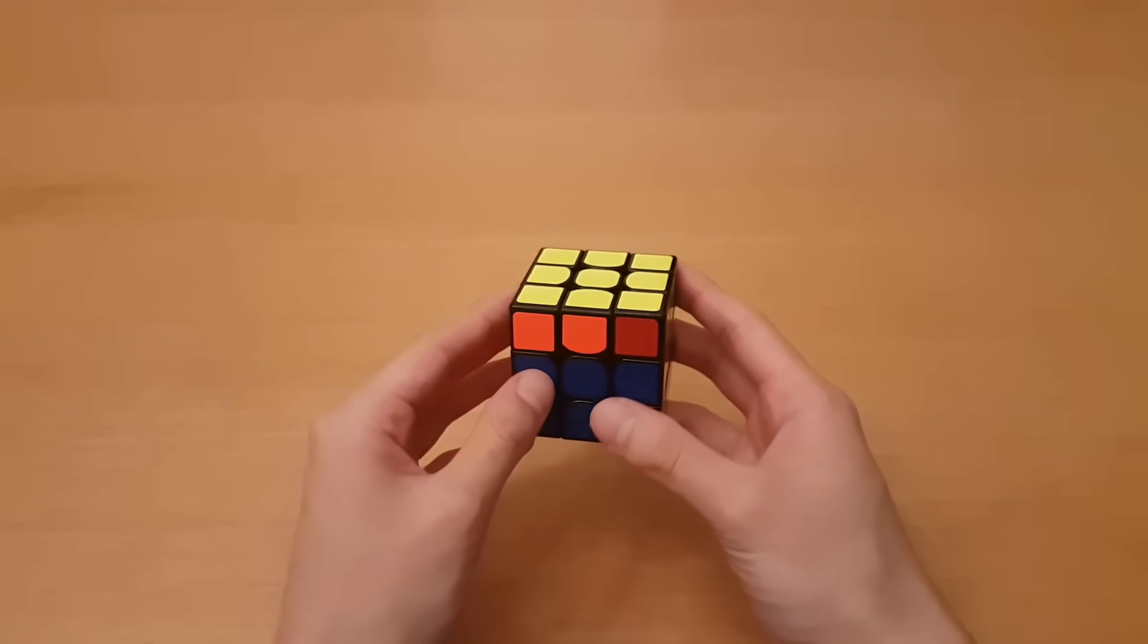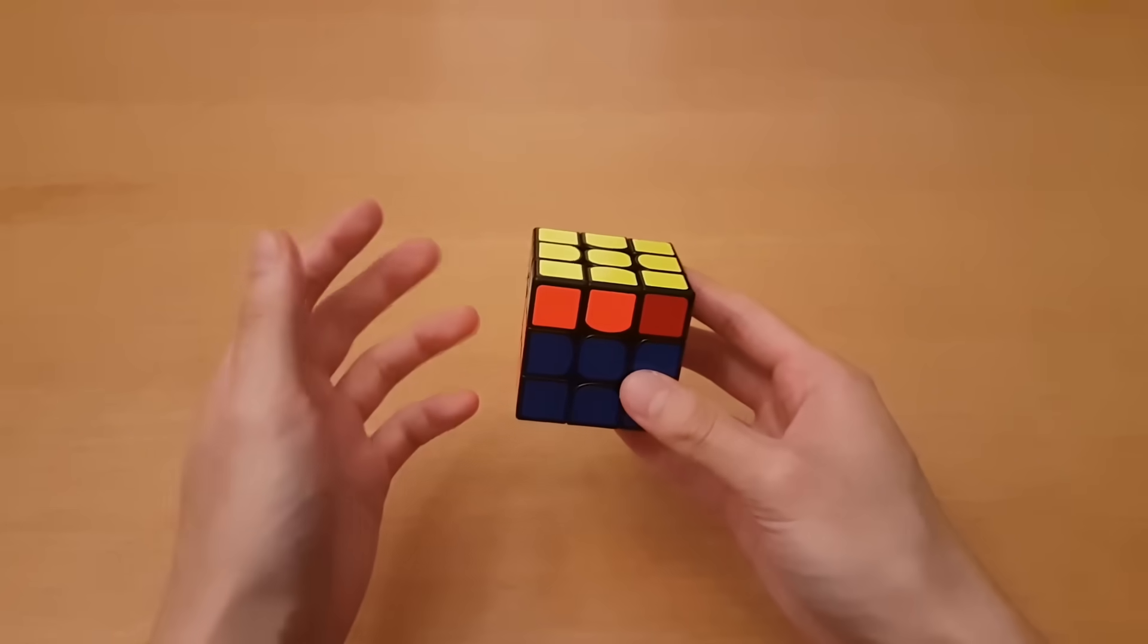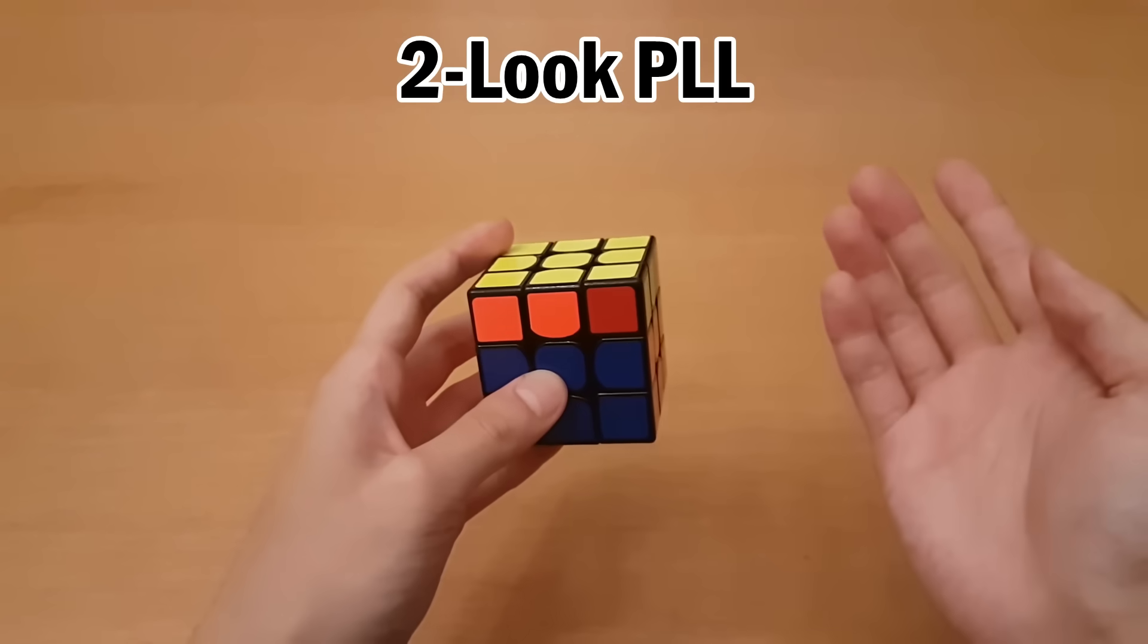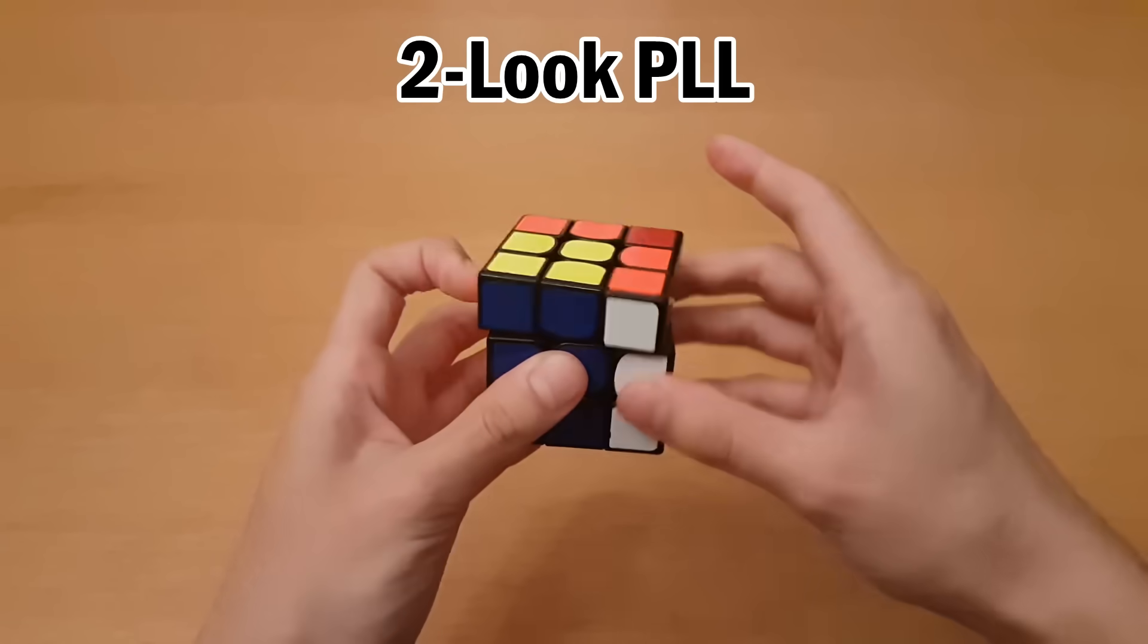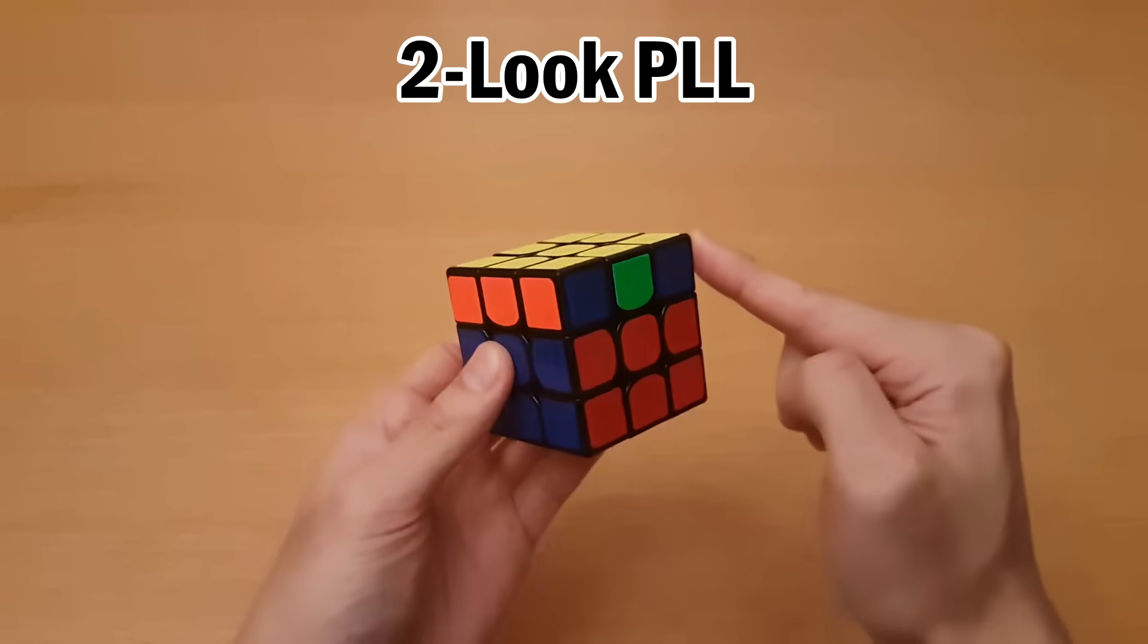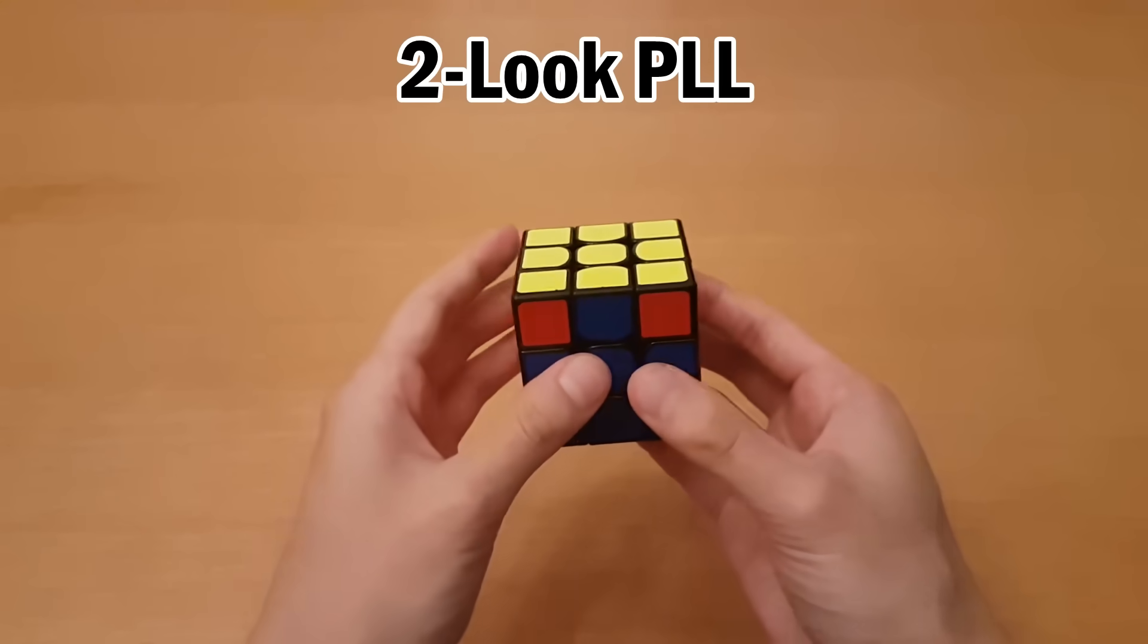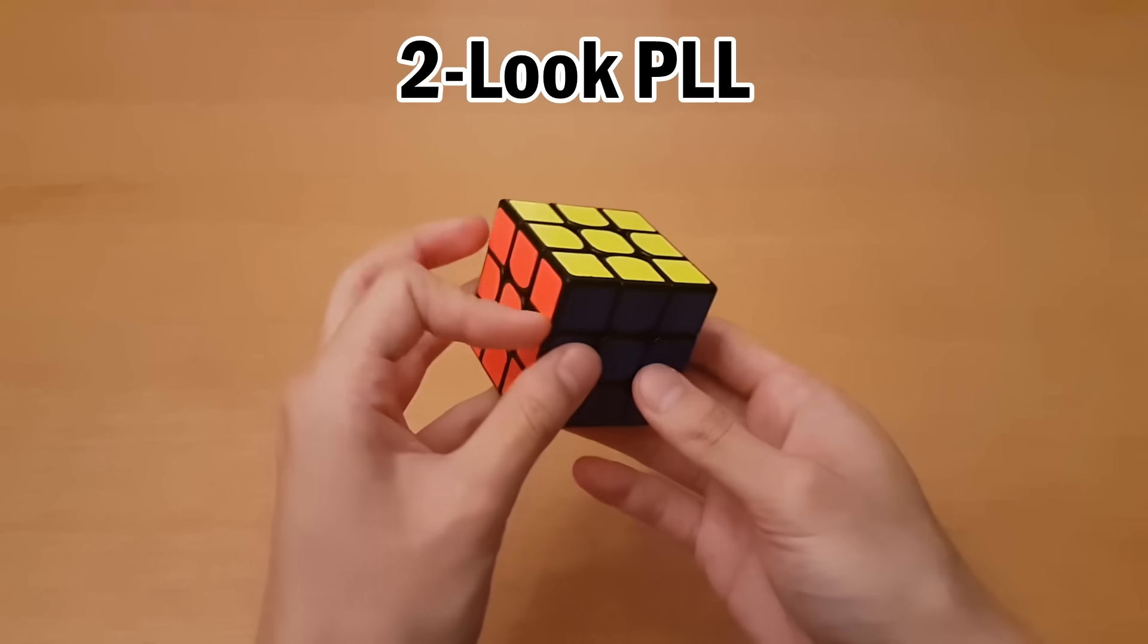So that's it for 2-look OLL. You have 10 algorithms in order to solve all of the top, and if you're interested, the next step is called 2-look PLL, or permutation of the last layer. So that's going to be the next video. You do one algorithm that can solve all of the corners, and then you do another algorithm that can solve all of the edges. And then that's it.